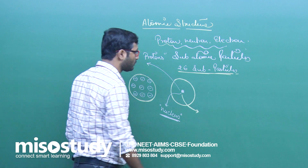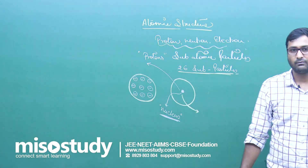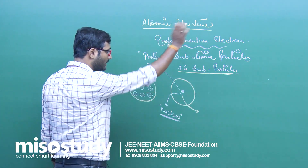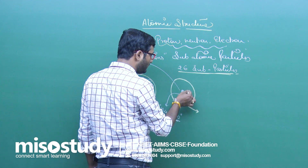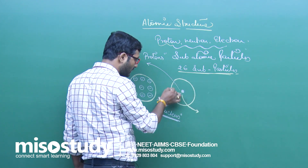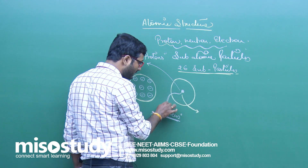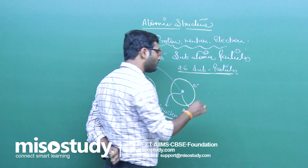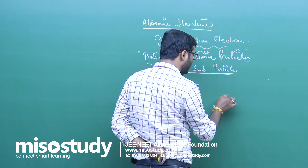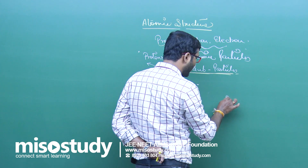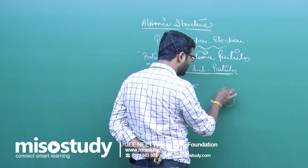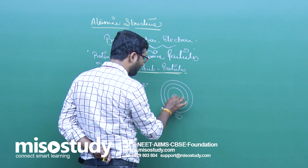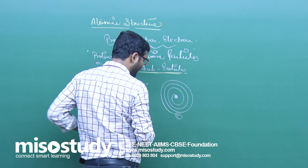At that time, the discovery of the neutron had not yet taken place. So in Rutherford's model, the protons are in the nucleus and electrons revolve around the nucleus. But according to classical mechanics, when any particle revolves it will lose energy, and after some time the electron may fall into the nucleus, making the atom unstable.